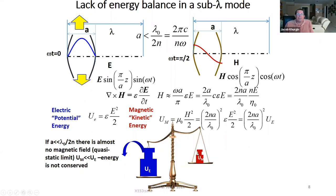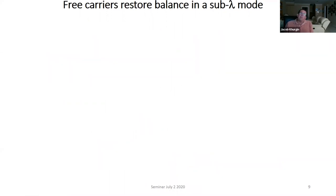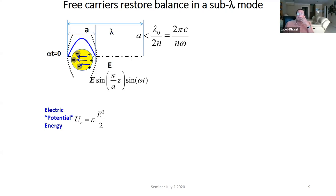In other words, you have electric energy here, but you cannot balance it with magnetic energy. So of course, the excess of this electric energy will just radiate out and the whole thing will decay. And if you look at it, this parameter is basically the diffraction ratio. So that kind of explains the diffraction limit from energy conservation, and that immediately gives us a way around it. How do we fool it? That's why I make the point that electric energy is equivalent to potential energy and magnetic energy is equivalent to kinetic energy.